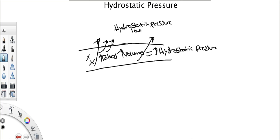What does the hydrostatic pressure in the interstitial space do? It pushes fluid in. Hydrostatic pressure inside the blood vessel pushes fluid out, whereas the hydrostatic pressure inside the interstitial space and around the cells pushes fluid in. So you have one force out and one force in.